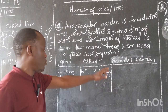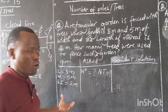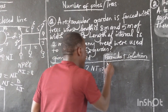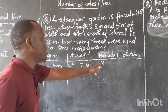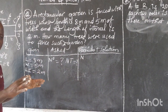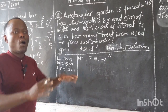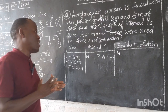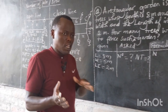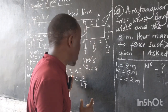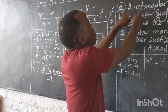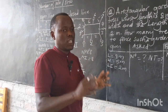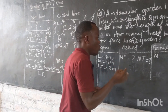Let me go to the formula so you can see how to handle this question. Before writing the formula, we first see whether our line is closed or open, so we know which formula to apply. This question involves a rectangular garden, so immediately it is a closed line.